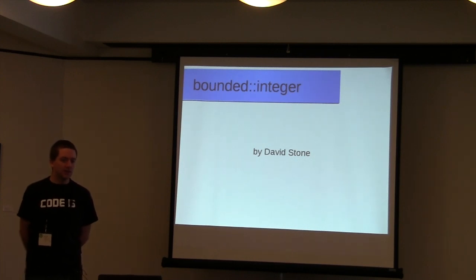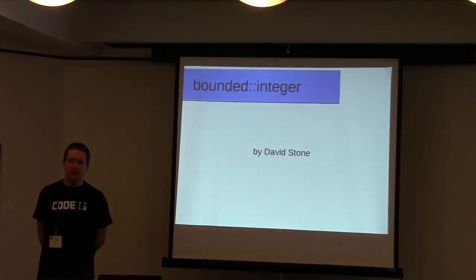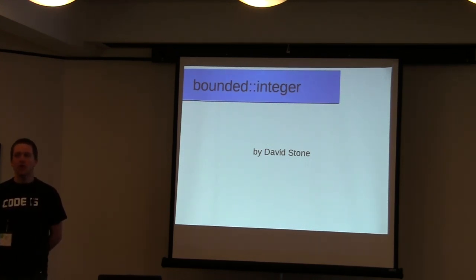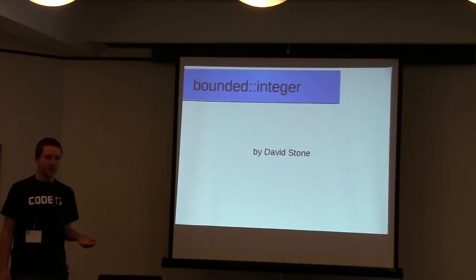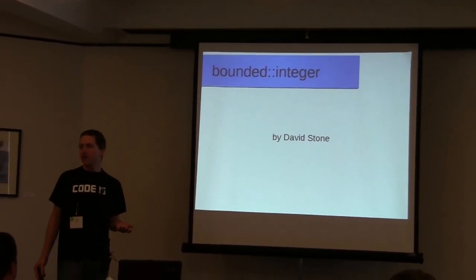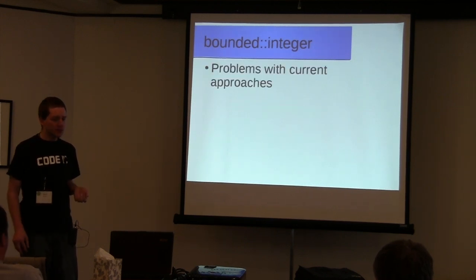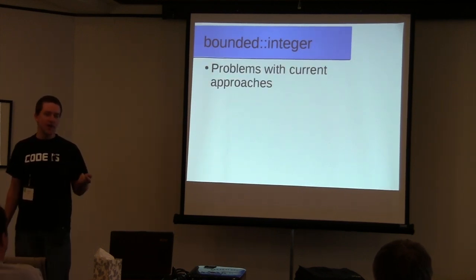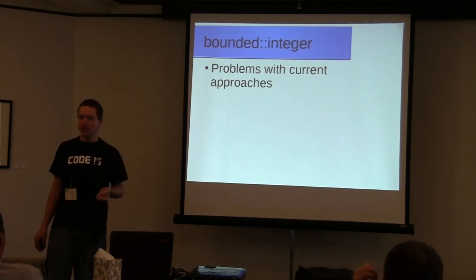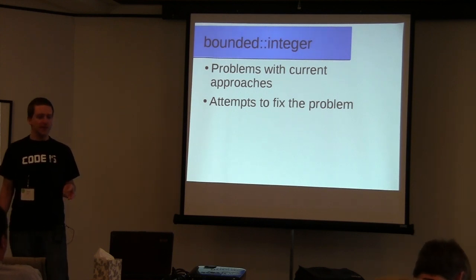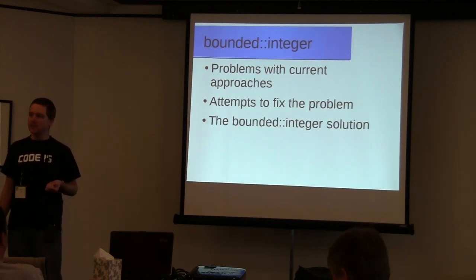Today I'm going to be talking about a library I wrote called Bounded Integer. The ultimate goal of the library is that it will automatically track the bounds of an integer type throughout various expressions using type deduction, and then you can use these bounds to create more type safety and more performance. I'm going to start by describing the problems of current approaches related to integers in C++, then move on to other attempts to fix the problem, and finally what this library does differently.